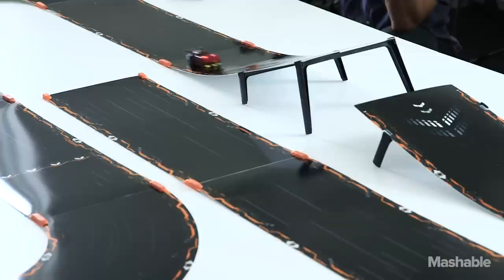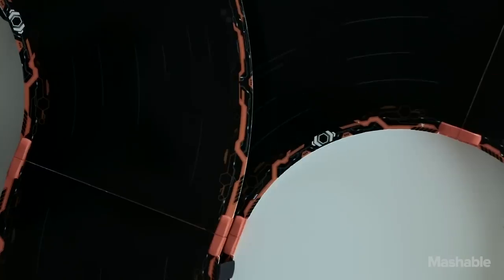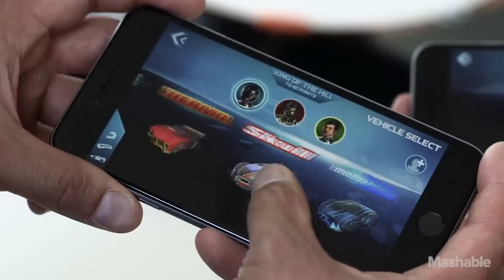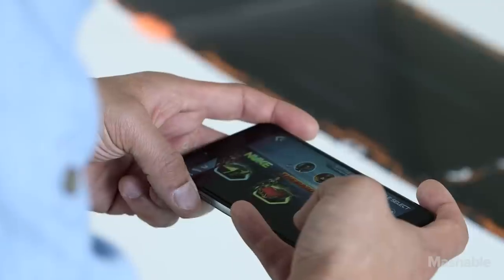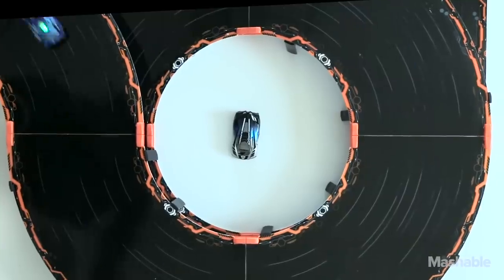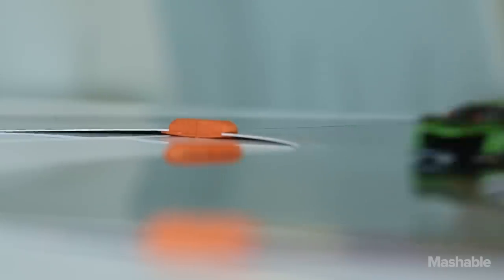It's easy to set up with flexible magnetic tracks, and it has some of the smartest cars around. Each car is a 50 megahertz computer that reads the track, talks to other cars, and can even power up just like a real video game.